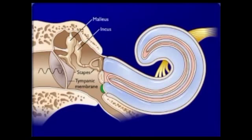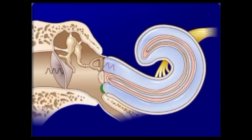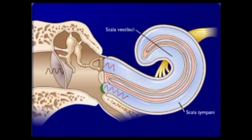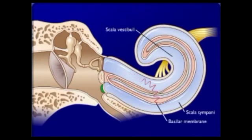The footplate of the stapes vibrates in the oval window. Vibration of the footplate causes the perilymph in the scala vestibuli to vibrate, which in turn causes displacement of the basilar membrane.